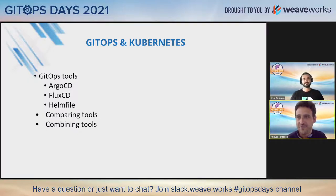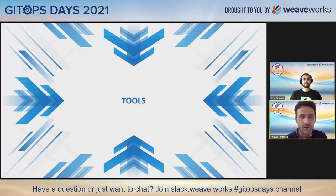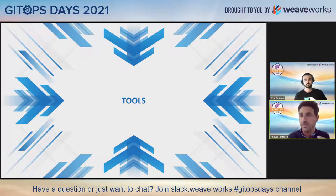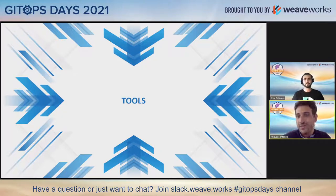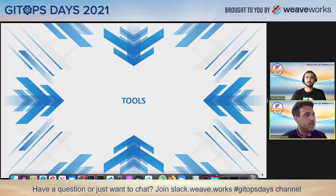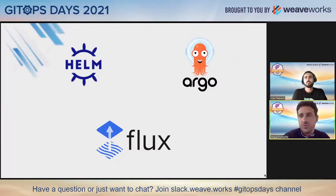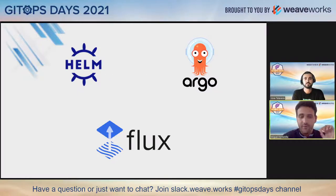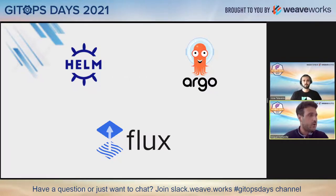Thank you, Jose, for the introduction and for presenting the topic. We're going to start talking about our GitOps tools. It's important to point out that although all the tools we review in this presentation do support Kubernetes raw manifests and several templating languages, this presentation is going to focus mostly on the usage of Helm alongside these tools. We're going to be comparing three main tools: Argo CD, Flux, and HelmFile, and offering some of the stronger points of each tool and comparing them.